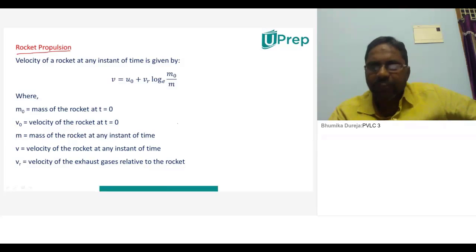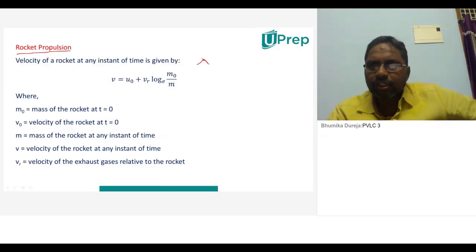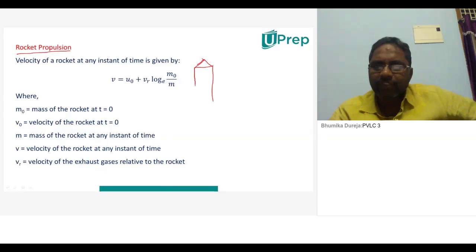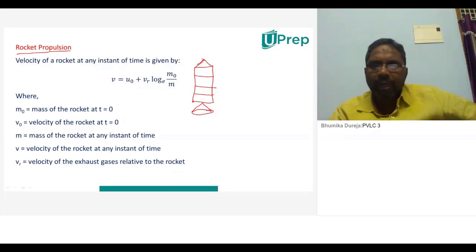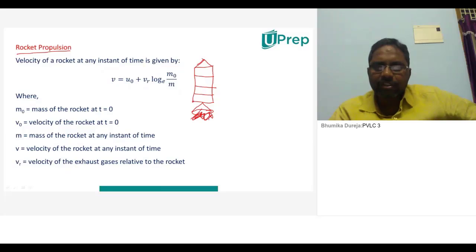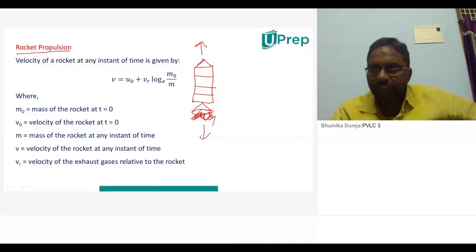Let me draw the rocket — I'm not good at drawing, but I'll try. Here is the sharp end of the rocket, and after that four different stages will be there: stage one, stage two, stage three, and stage four. At the bottom of the rocket there is one nozzle — a small opening — and gases escape from this nozzle. When gases come out downward, the rocket moves up.